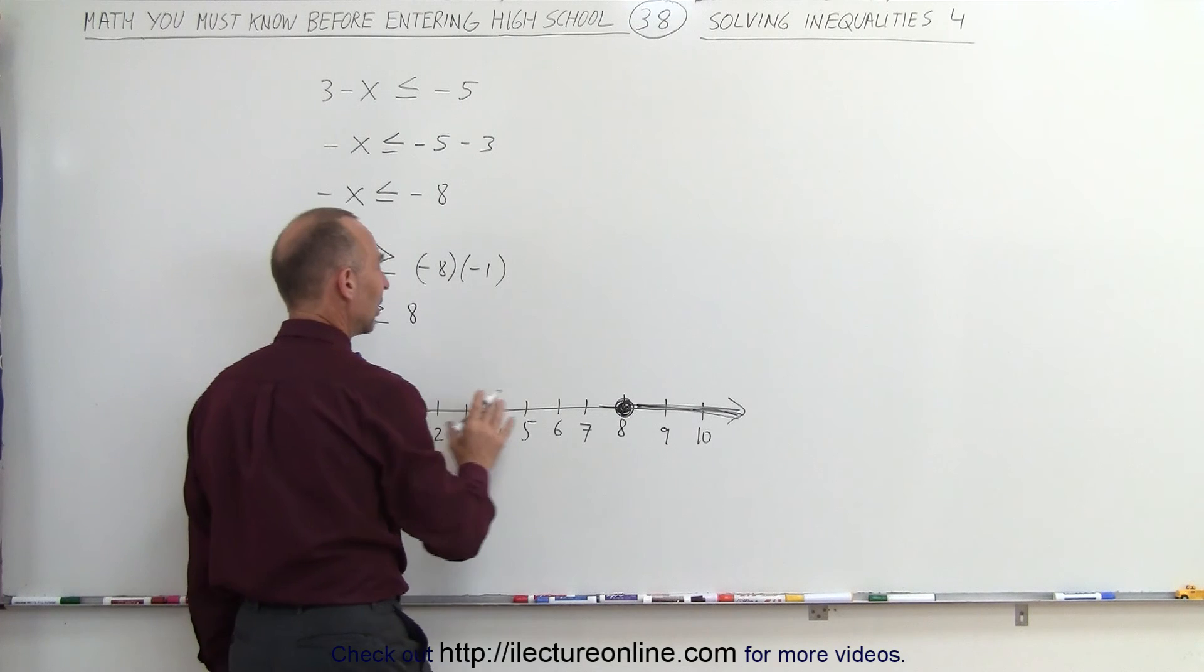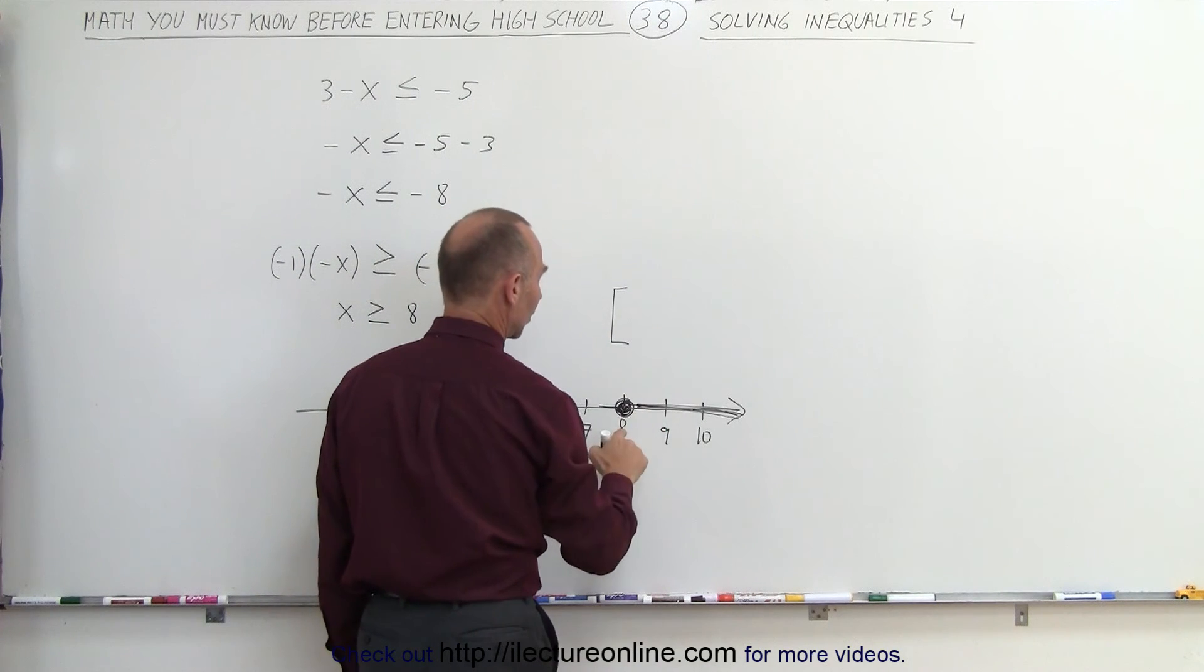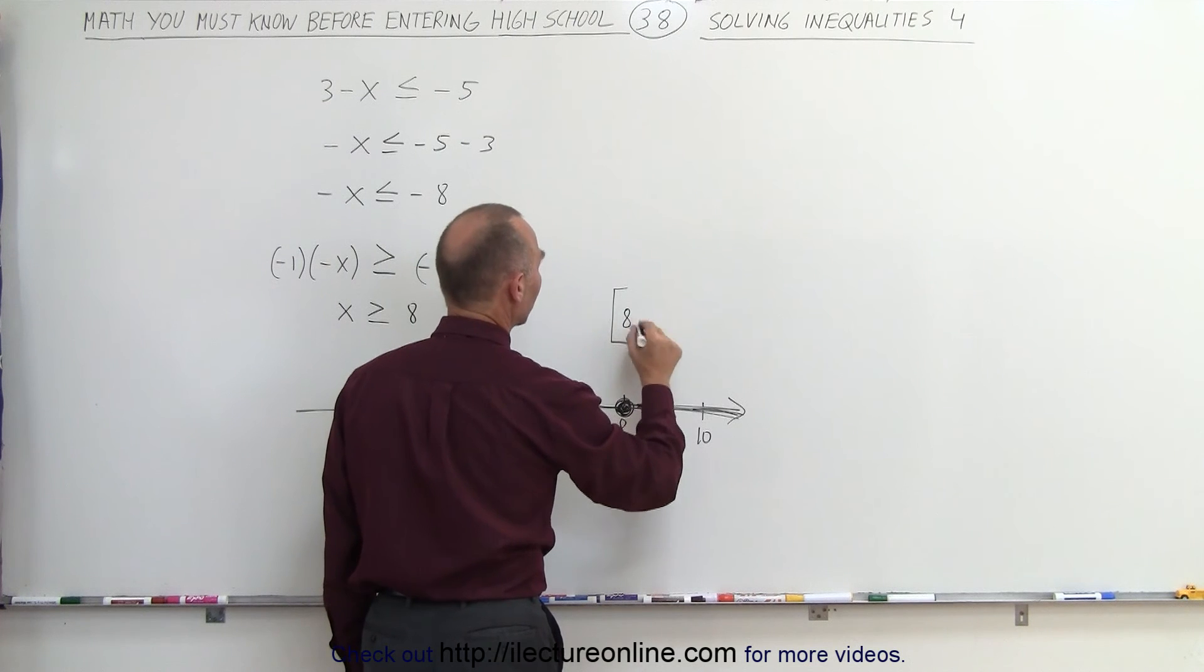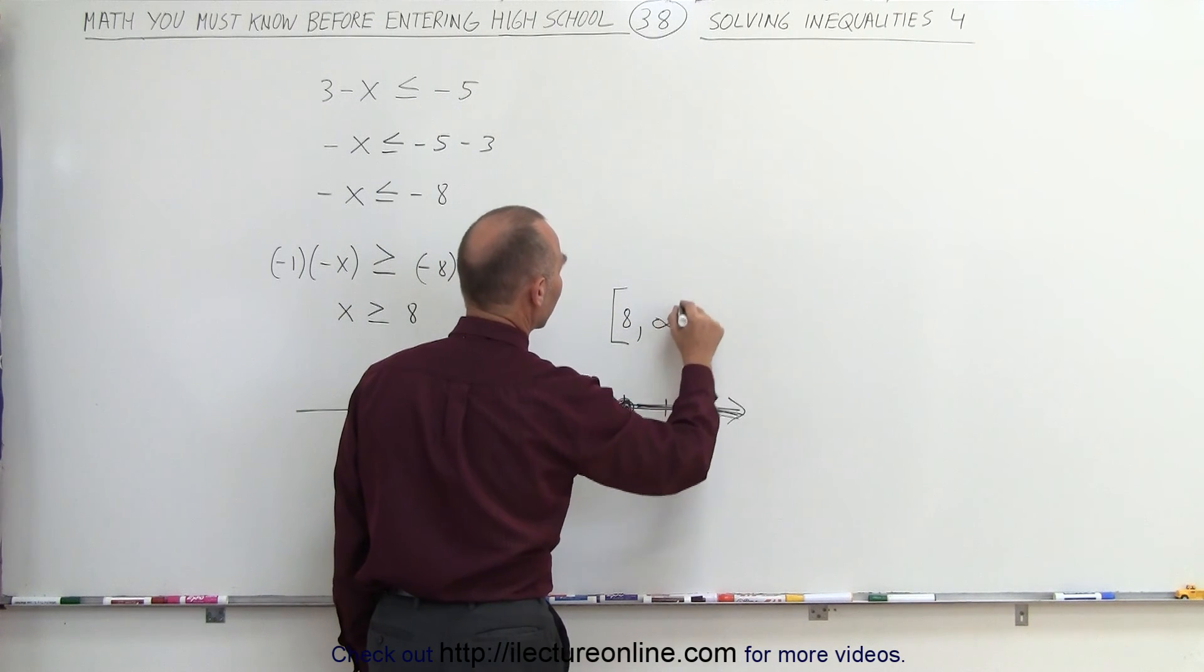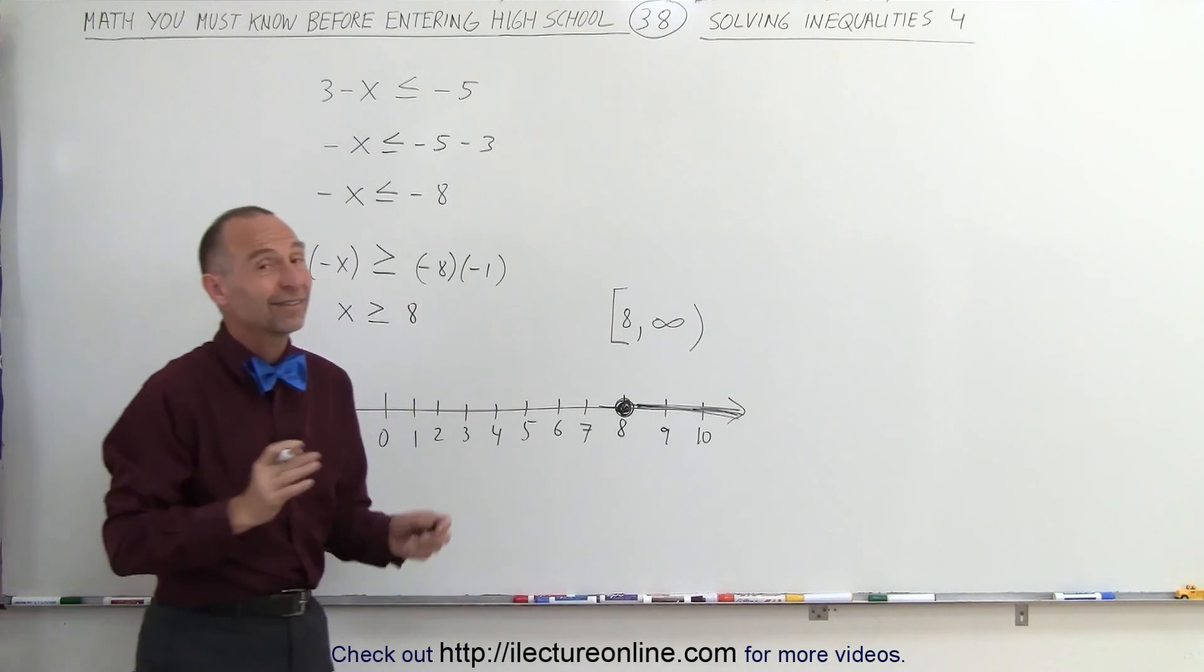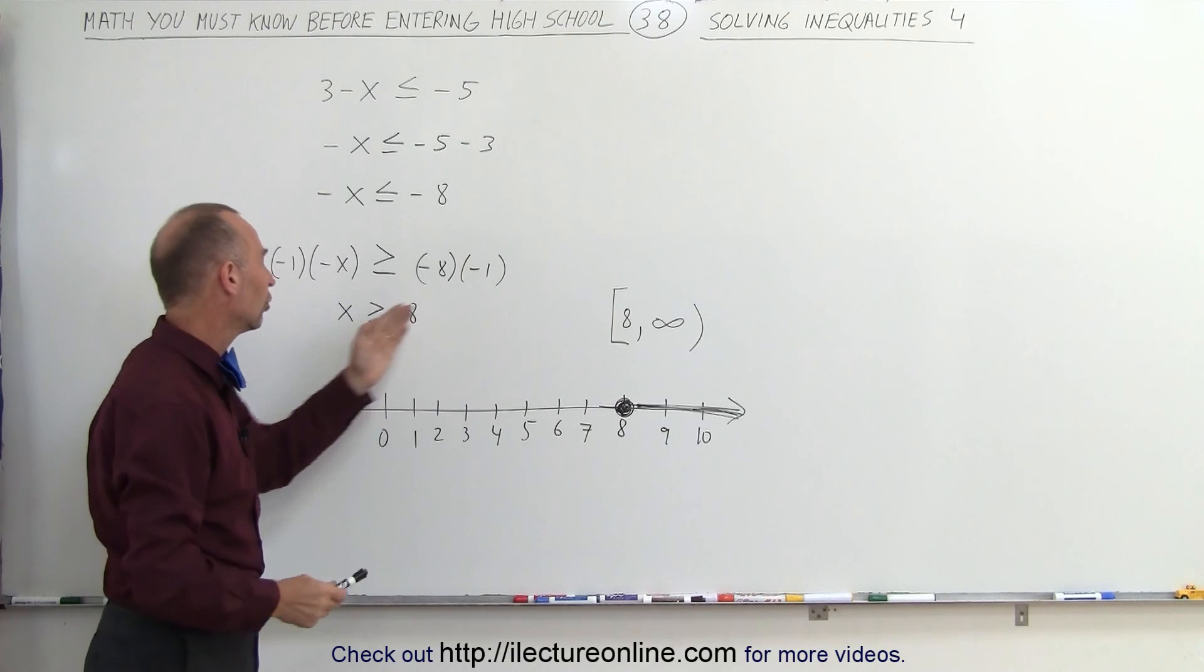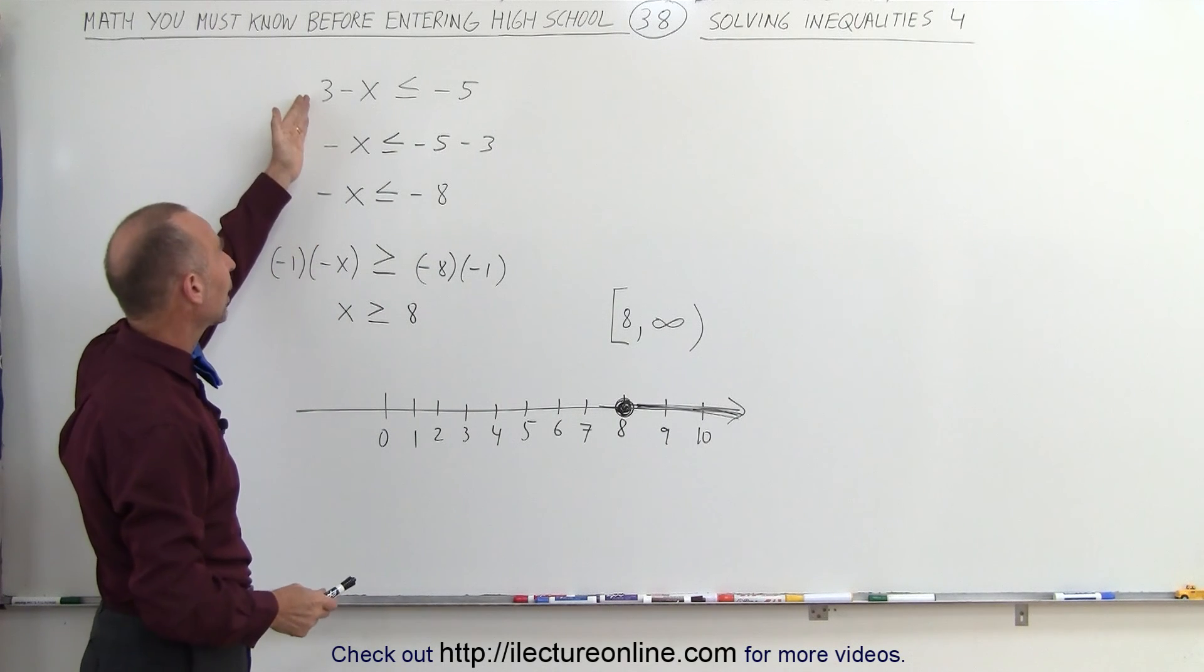If you want to write that as a range, we could say that it starts at 8. We use a bracket because it includes the endpoint 8, and it goes all the way out to infinity on the other side. Put a parenthesis around that because it cannot include infinity since that's an undefined number. And that's how we indicate the solution to this inequality.